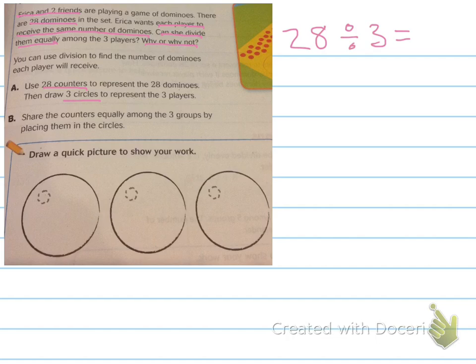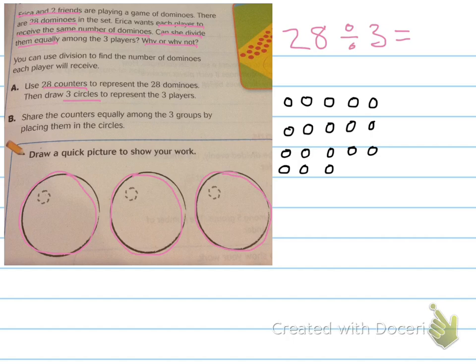They got it started for us, so let's finish it up. We made three circles: one, two, three, because three is our divisor. Now we need 28 counters. So I'm going to draw 28 counters over here. One, two, three, four, five, six, seven, eight, nine, ten, eleven, twelve, thirteen, fourteen, fifteen, sixteen, seventeen, eighteen, nineteen, twenty, twenty-one, twenty-two, twenty-three, twenty-four, twenty-five, twenty-six, twenty-seven, twenty-eight.